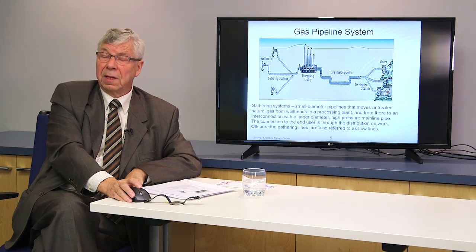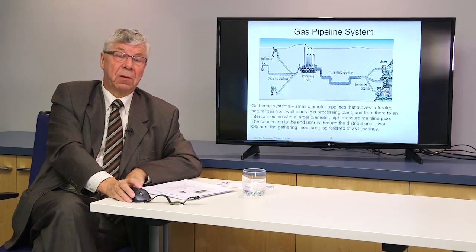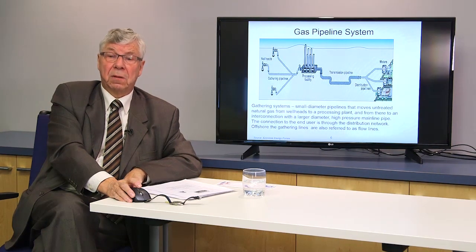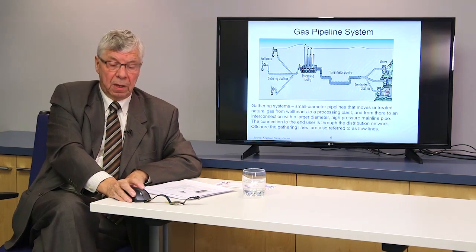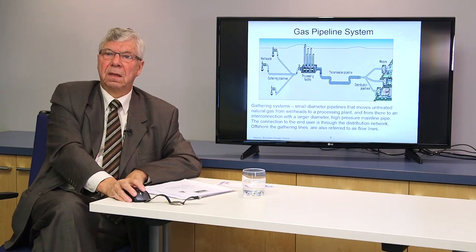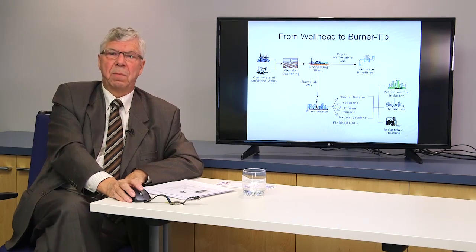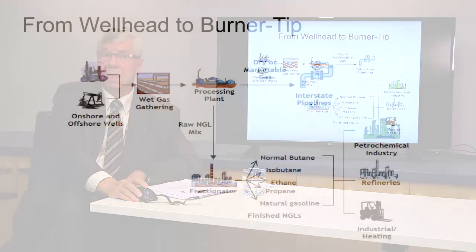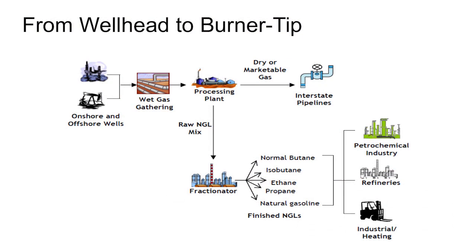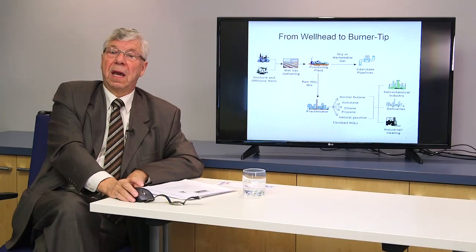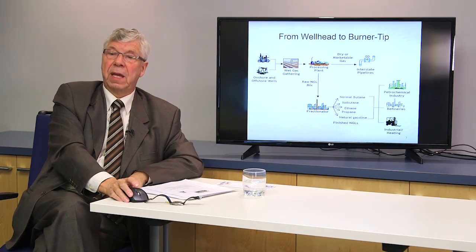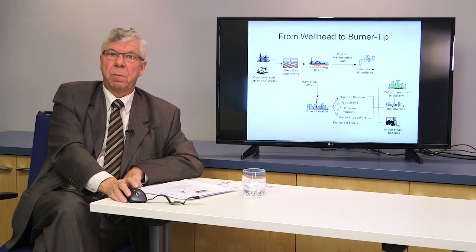Offshore gathering lines are sometimes called flow lines. Being offshore, they don't have the opportunity to locate intermediate compression, so offshore gathering systems are generally operated at much higher pressure. The journey from the wellhead to the burner tip — whether onshore or offshore — generally starts with wet gas going from the wellhead to the processing plant, where liquids are stripped out and go through a fractionating process to become butane, isobutane, propane, and feedstocks for the petrochemical industry.